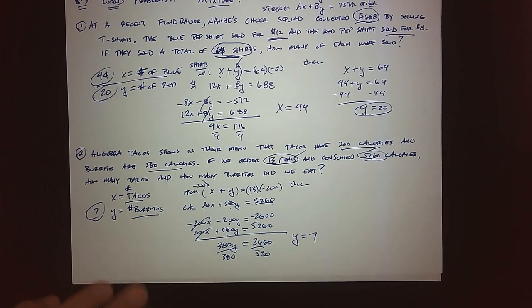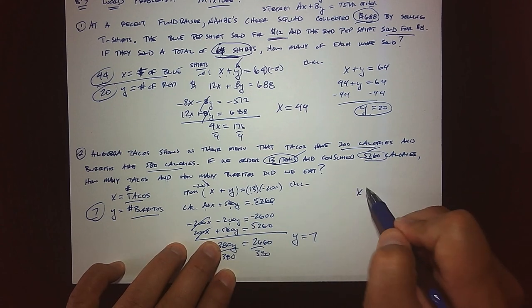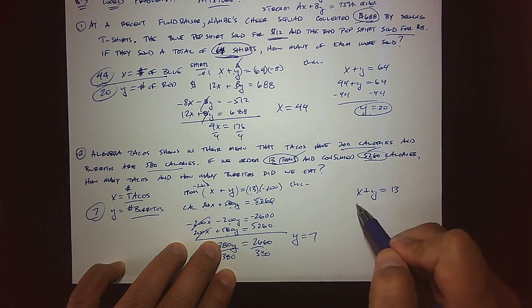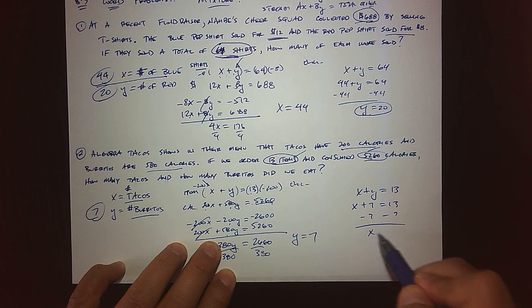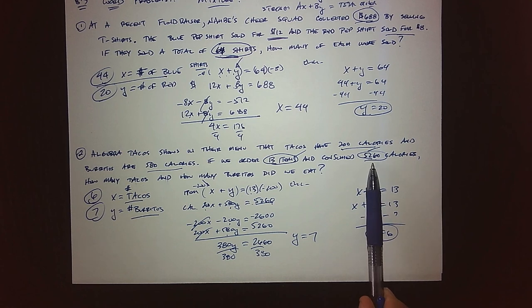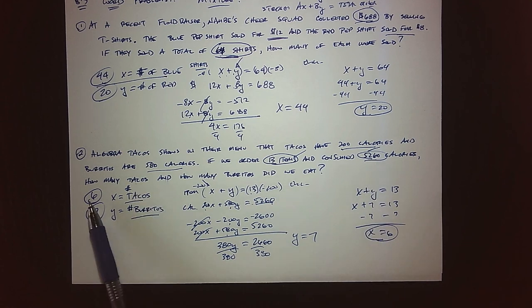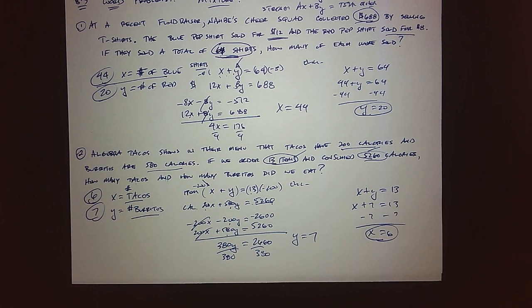So seven of the items were burritos. To find x, I'll use the simple equation x plus y equals 13. Since y equals 7, subtracting gives x equals 6. So we had 6 tacos and 7 burritos, consuming 5260 calories across 13 items total. This illustrates using a mixture of elimination and substitution techniques together. We'll finish the remaining problems in another video.